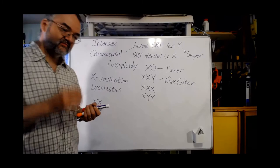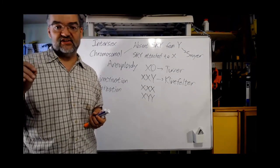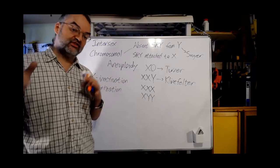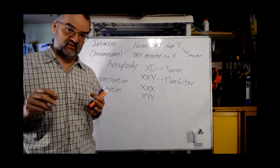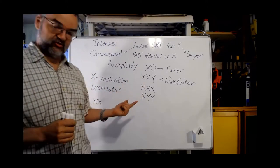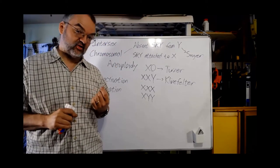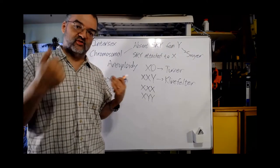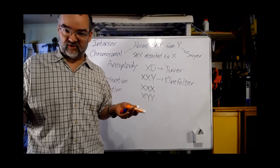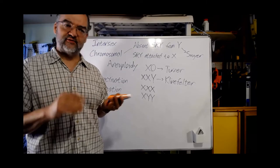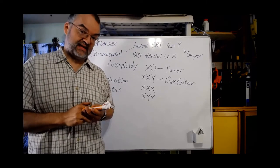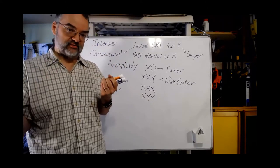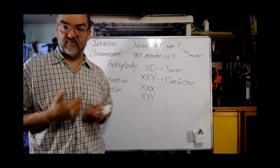That inactivation happens at a stage called gastrulation, very early in embryonic development, and happens randomly in each cell. So which X chromosome inactivates is different in different cells. In any individual with more than one X chromosome, which X chromosome is active at different places in the body is not always the same — this is called mosaicism. This is, for example, why calico cats have the hair pattern they do: one of their genes for hair color is on the X chromosome, and which X chromosome gets inactivated can produce different effects depending on where in the body you are.